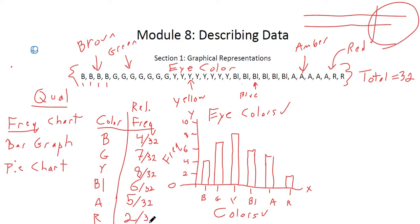Relative frequencies and percentages tend to be a lot more useful. If I told you that 8 of the individuals had yellow eyes, your question would be: out of how many? 8 out of 10 is a lot; 8 out of 800 is not so many. So it's really important to talk about what my values are relative to — what the total is.